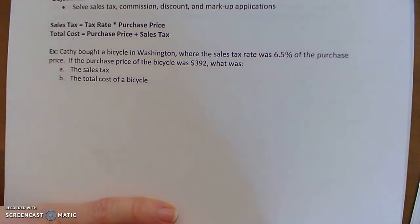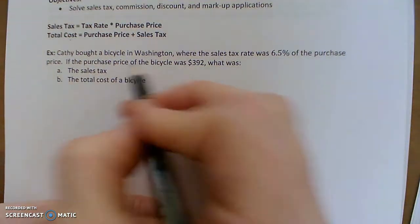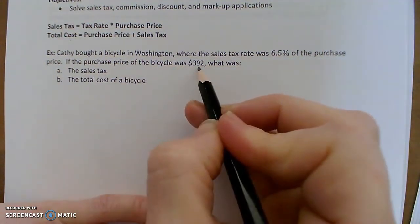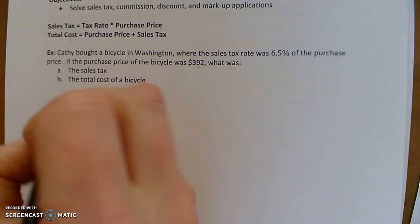So Kathy bought a bicycle in Washington where the tax rate was 6.5% of the purchase price. If the bicycle was listed for $392, what's the sales tax and what's the total cost of the bike?